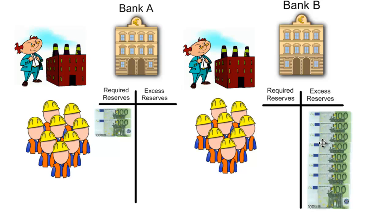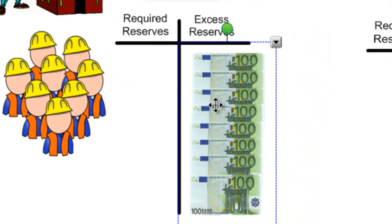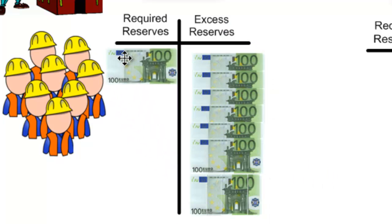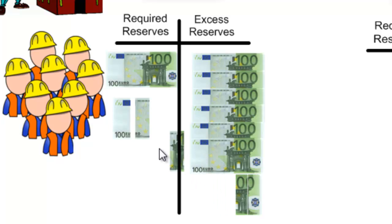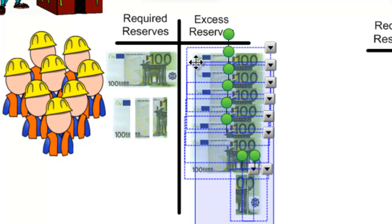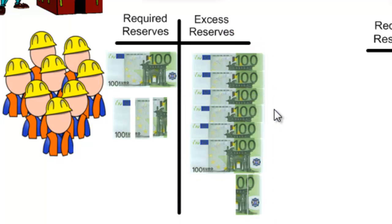Now we have 800 euros in Bank B. With the reserve requirement of 0.2, Bank B must set aside 160 euros into its required reserves. That is 160 euros moved into required reserves.